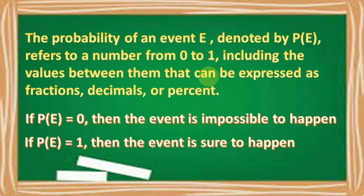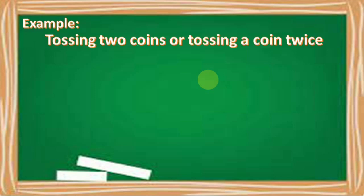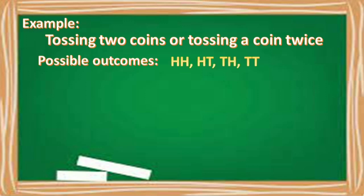Let's have an example: tossing two coins, or tossing a coin twice. Let us determine the possible outcomes. We can have head-head, head-tail, tail-head, and tail-tail. So we have four possible outcomes.